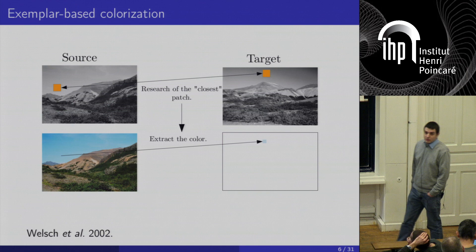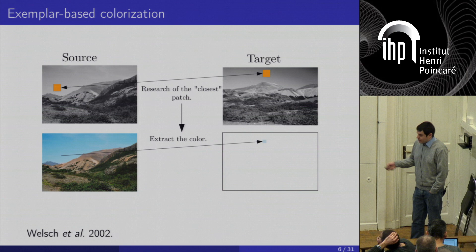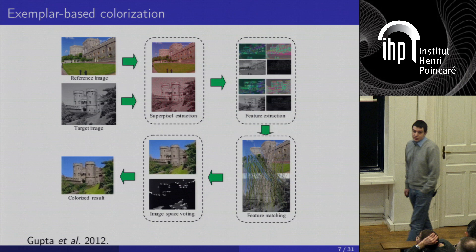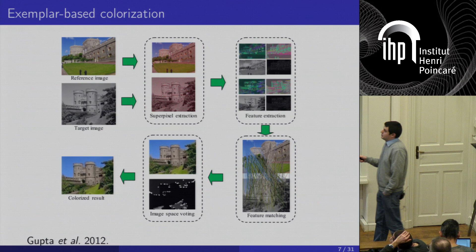This approach was introduced by Welsh in 2002 and further extended, for instance by Gupta and collaborators. There, instead of patches, a super-pixel segmentation is used. Features are extracted from each super-pixel using a discrete cosine transform, and matched between the reference and target images. Scribbles are then placed and a diffusion method is applied to obtain colorized results. It works a little better than Welsh's method because it is more adapted, thanks to the super-pixel segmentation.